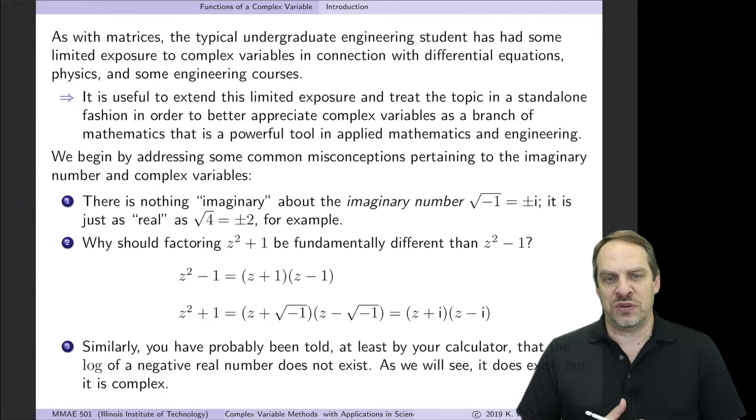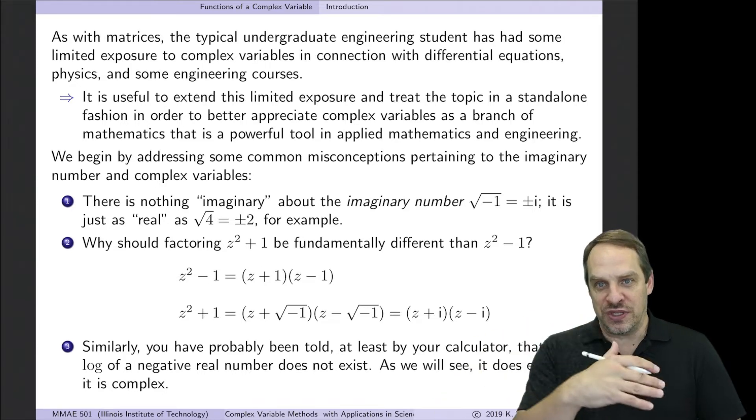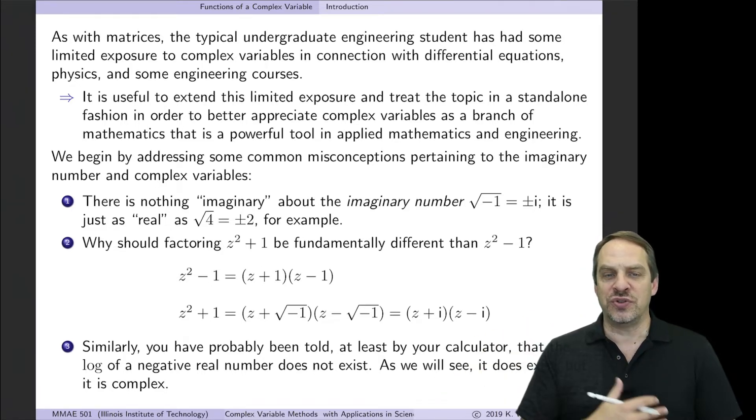Now, another misconception has actually been propagated by most of our calculators. If I put in a negative number and I hit the log button, usually it gives an error. It says it doesn't exist. Well, it does exist. It's just that it so happens to be a complex number. So once again, I should be able to put any number into the logarithm as an operator and get a result back. The fact that we were told that logs only exist for positive real numbers, that's just because those are the ones that give us real results. But there's no reason why I shouldn't be able to put any other number in there as well. I just so happen to get a complex result.